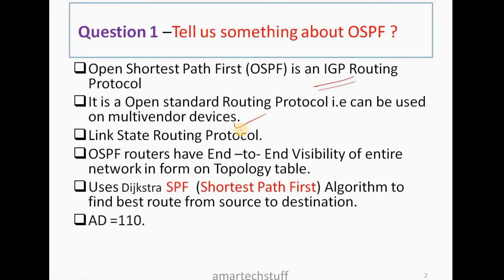A very important characteristic of OSPF is that it is a link state routing protocol. Since it's a link state routing protocol, an OSPF router has something known as end-to-end visibility of the entire network in the form of a topology table. Whenever this question is asked, you must mention that OSPF routers have a topology table.